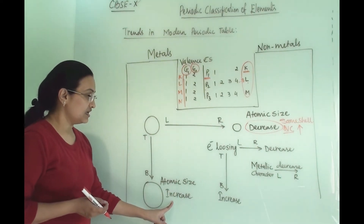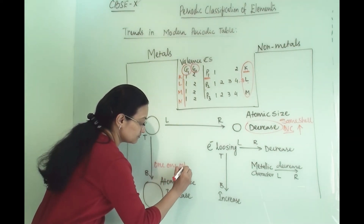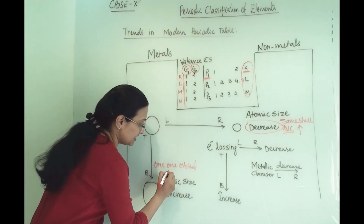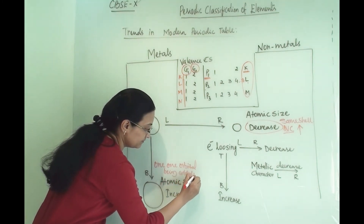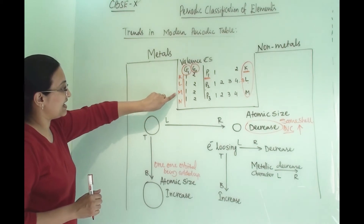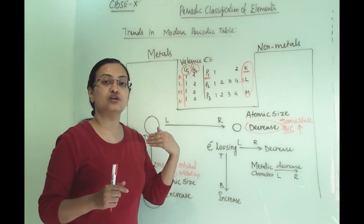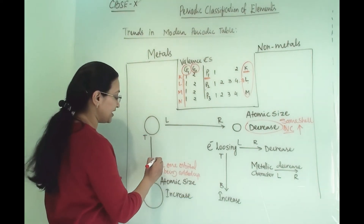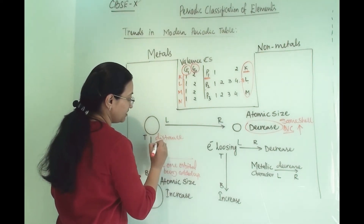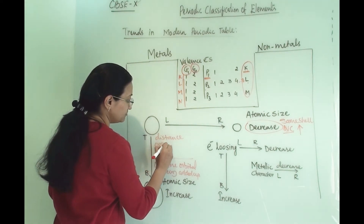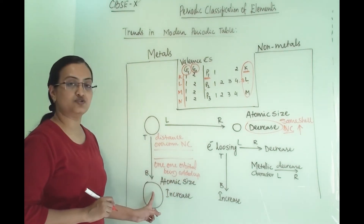Whereas from top to bottom, or across the group, atomic size will increase, because one orbital is being added — K, L, M, and N. Here also nuclear charge will work, but the distance will overcome the nuclear charge. That is the important point to mention: the distance will overcome the nuclear charge, and that is why the atomic size will increase.